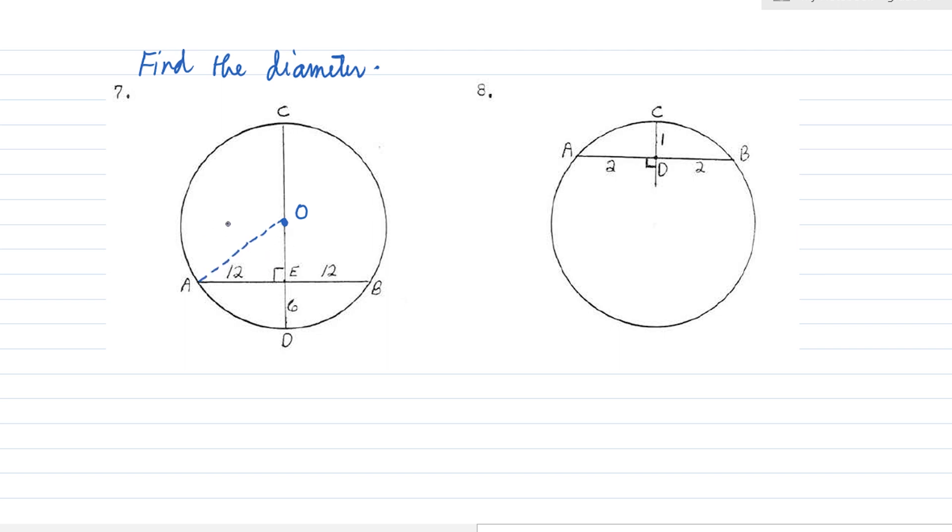Now, this radius, let this be R. Obviously, this whole thing is also R. It's a radius also. And this segment over here, OE, is R minus 6. Right? It's R minus 6. Let me remove this first.